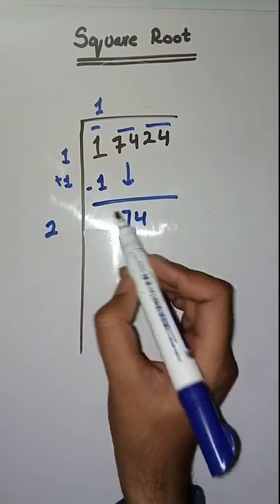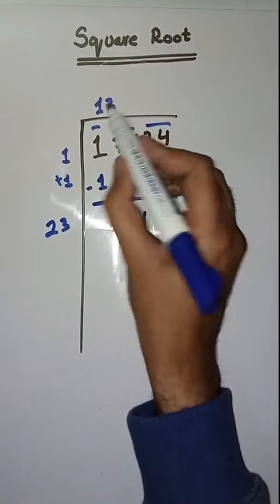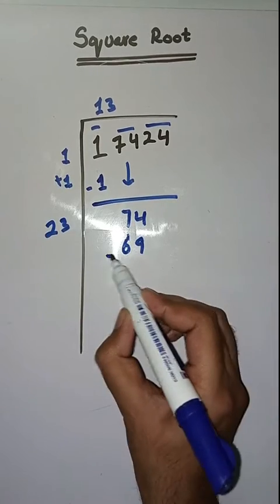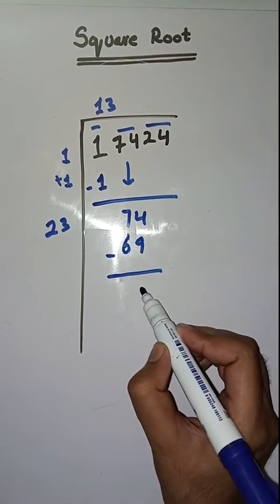Now we will take our number 3. 23, 3 sixes are 69. Minus karenge, maripas aajega 14 minus 9 is equal to 5, 6 minus 6 is zero.